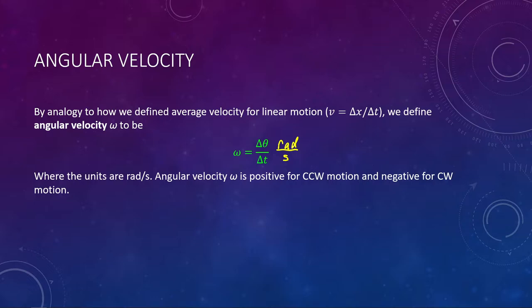It's important to know your directions. We start at zero degrees and go counterclockwise, so anything rotating counterclockwise is rotating in the positive direction — angular velocity is positive for objects that rotate counterclockwise. Angular velocity is negative for objects that rotate clockwise. This is analogous to linear motion: moving right is positive, left is negative. Here, counterclockwise is positive and clockwise is negative.